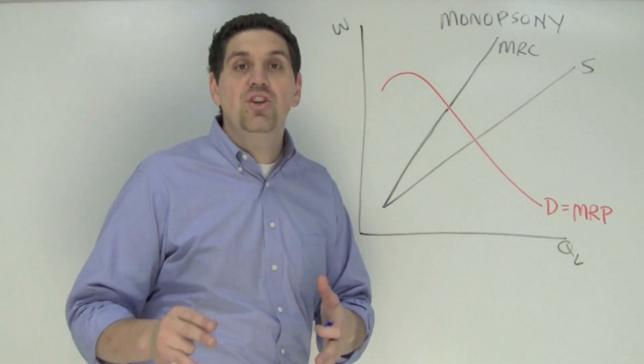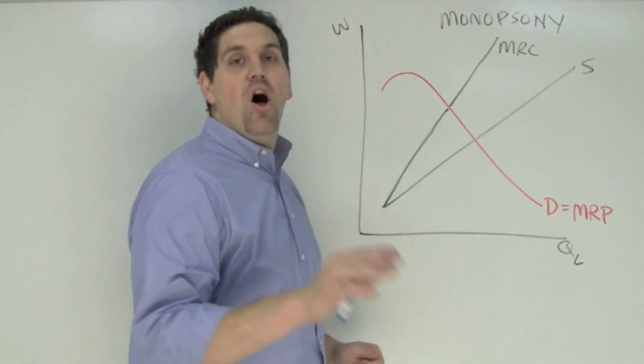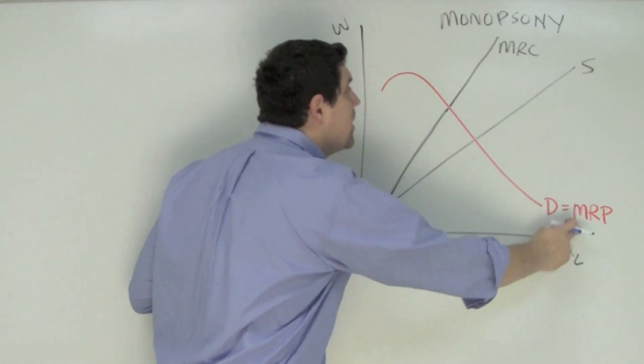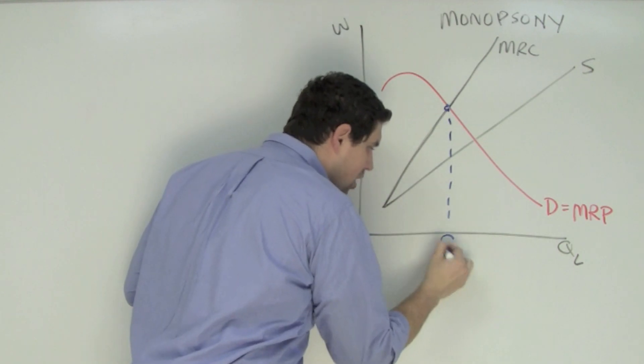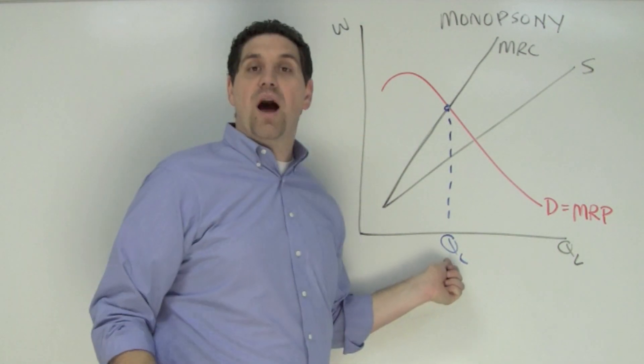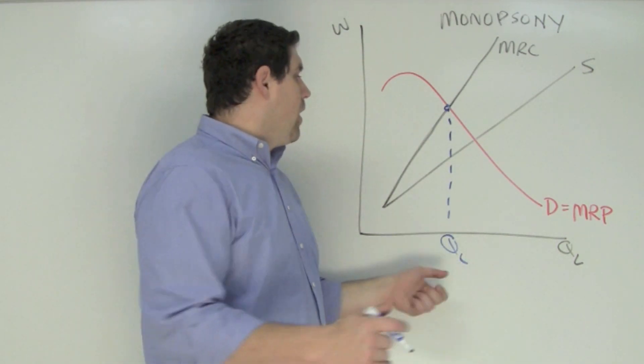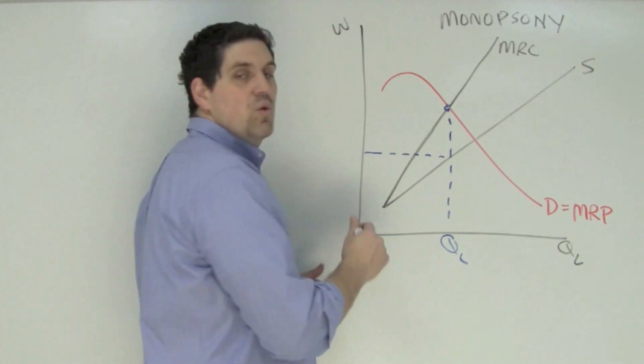Now let's figure out where the equilibrium wage and quantity will be for monopsony. All firms hire at the same spot, which is where MRP equals MRC. Right there. That is the quantity of labor that this firm would hire. Now how much are they going to pay those workers? Well, they're going to pay them the wage that the worker is willing to work for.